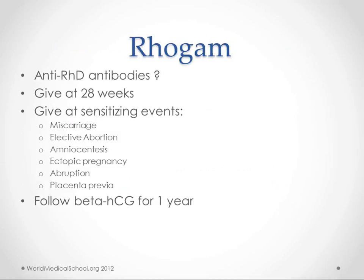So RhoGAM, like we mentioned, is an anti-RHD antibody. The question mark here isn't because I'm unsure — it's because it seems a little counterintuitive to give an antibody which is the cause of the problem. We're giving an antibody that could potentially cross the placenta and cause problems for the baby. But really what we're doing is giving these antibodies, which provide a negative feedback on the maternal immune system and prevent the maternal antibodies from forming plasma cells that would continue to create anti-RHD IgGs. That's basically how it works.